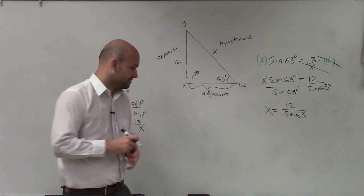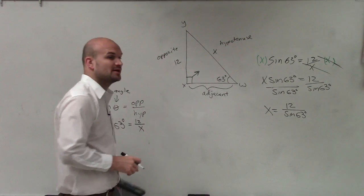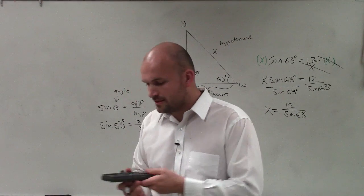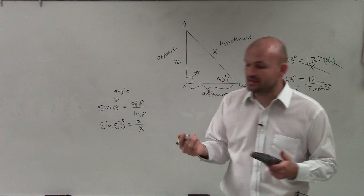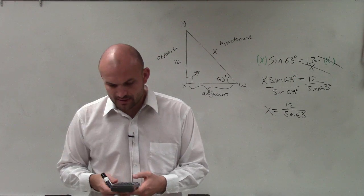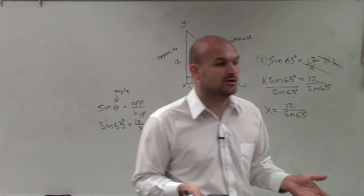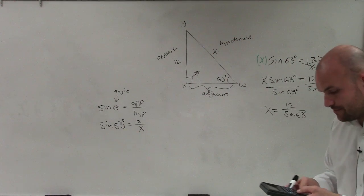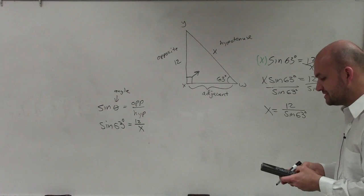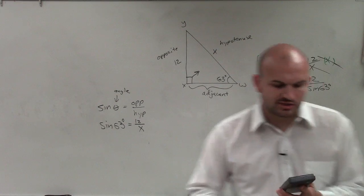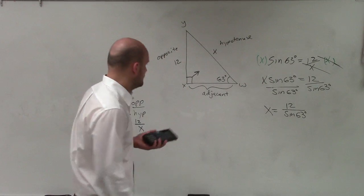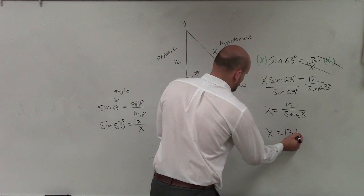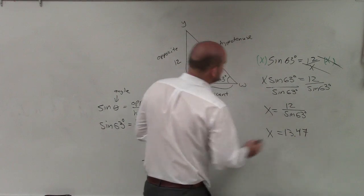Now we're not done yet. We still need to go ahead and plug this in our calculator. So we want to make sure our calculator is in degree mode, and if you don't know if it is, I can show you or at least help you how to put it into mode. It should automatically be in degree mode, but it could also be in radian mode. So I'm just going to take 12 divided by the sine of 63, and my answer is 13.4. So therefore, x equals 13.47. I'm going to round to the hundredths.